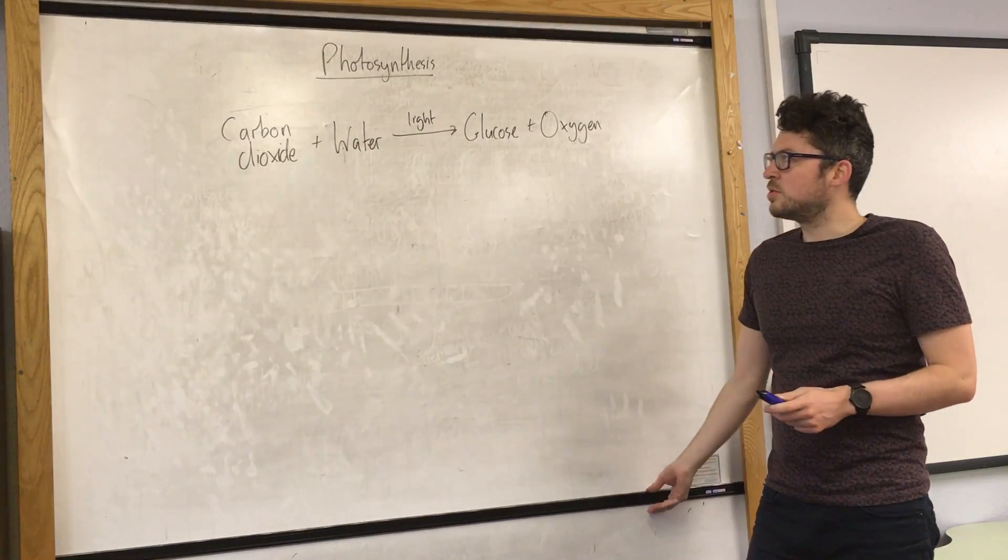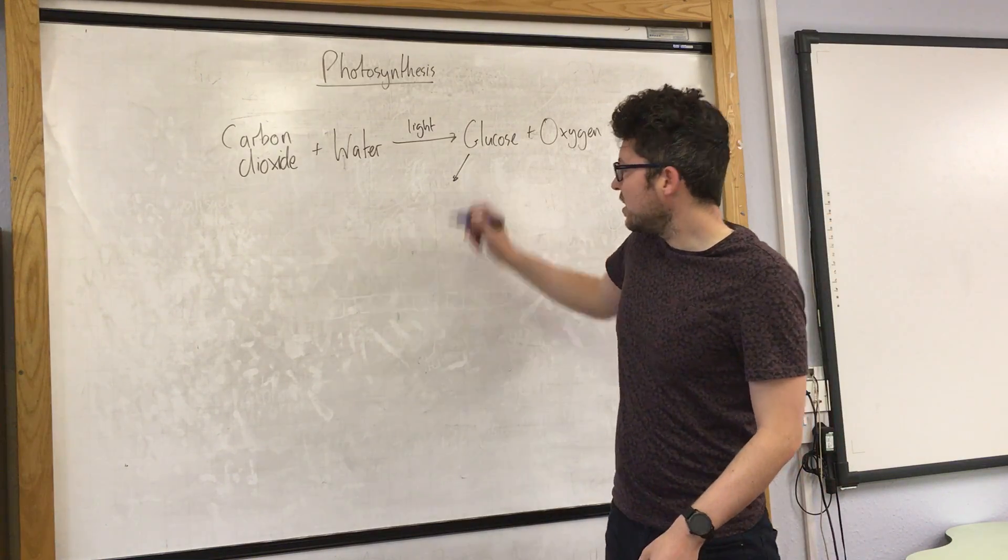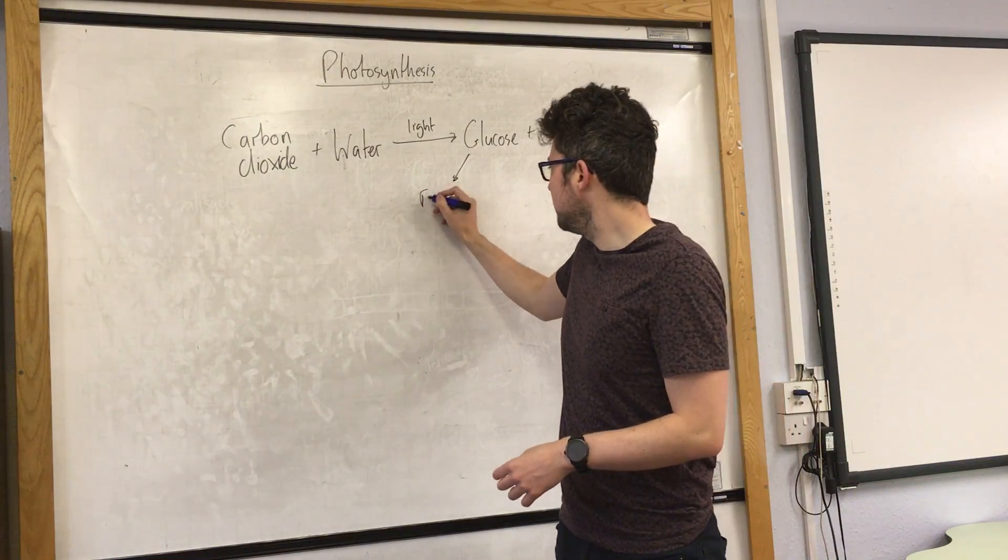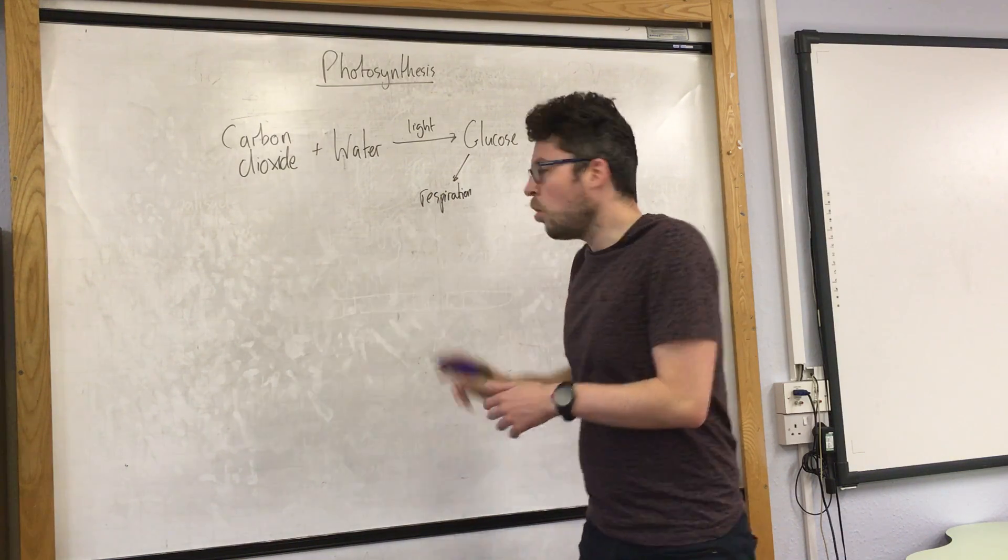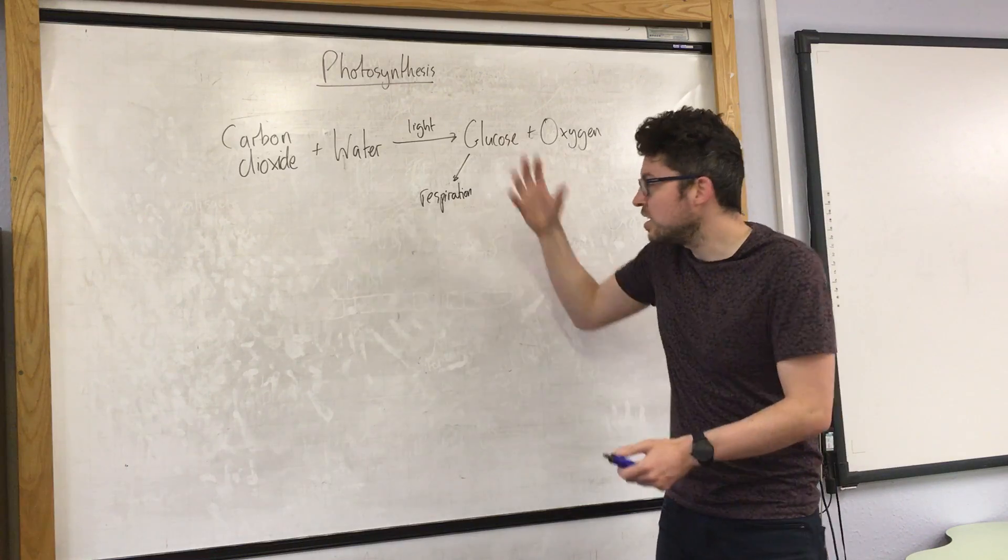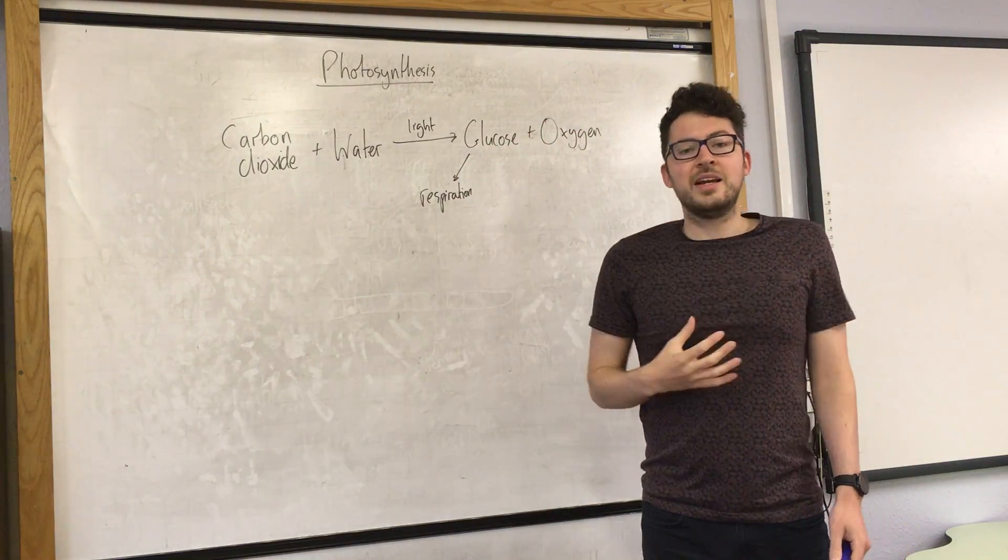Glucose can be used for many other things within the plant. Firstly, it can be used for respiration. All living things need to respire, including plants. The difference is that they get the glucose from this reaction, while we get it from our food.